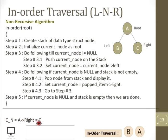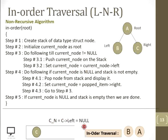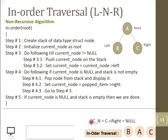Go back to step three — condition is true because current node is C, which is not null. Enter and push C onto the stack. Update the current node with C's left child, which is null. Condition becomes false again. Go to step four: current node is null and stack is not empty — pop C and display C. Update the current node with C's right child, which is null. Current node is now null.